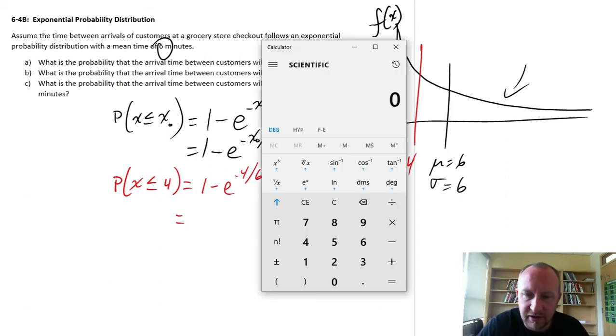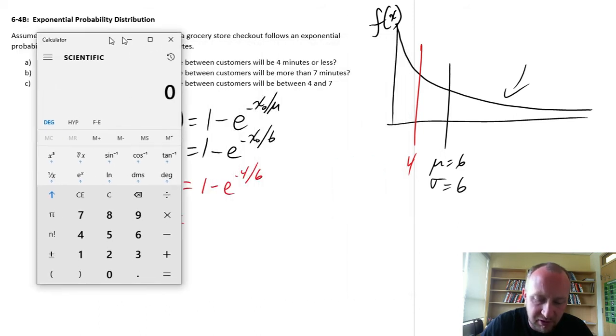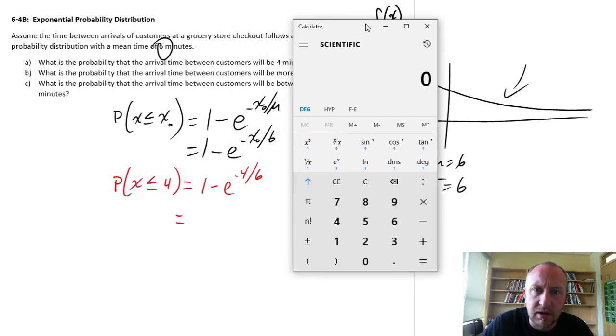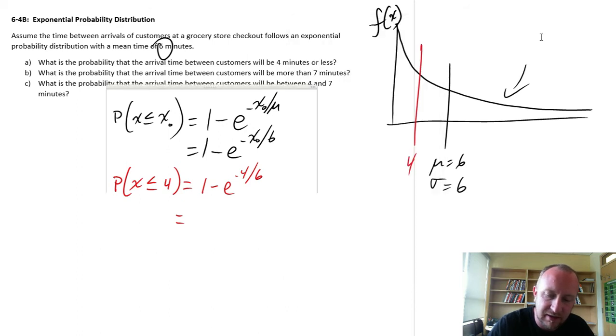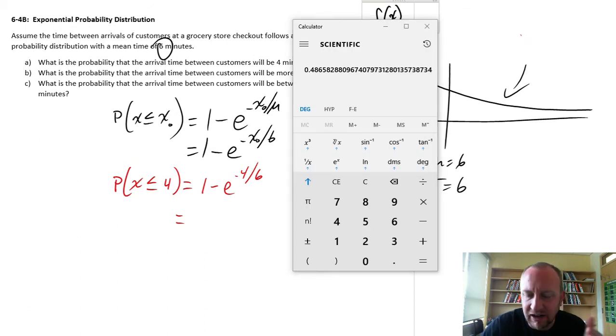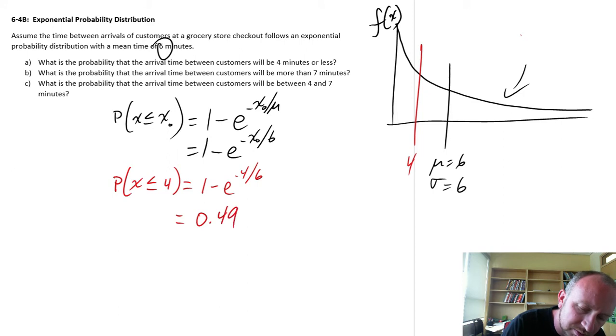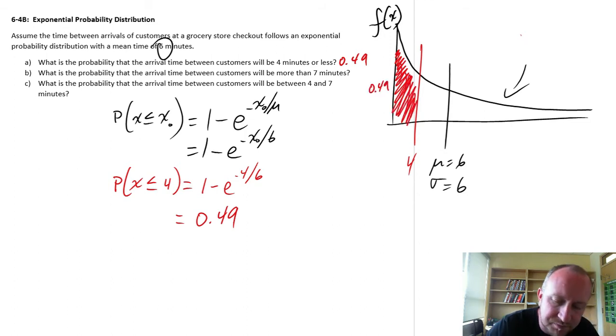Then punch in the numbers on the calculator. This calculator has a funny order of operations, but it will work. I'm going to go 1 minus, I'm going to first put in that negative 4 over 6 in brackets. Then I'm going to put that to the base e. Now I have 1 minus that, so 0.486. Let's round it 0.49. So here's the area to the left of 4, this red space 0.49.